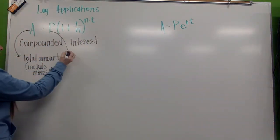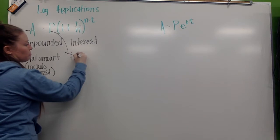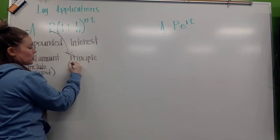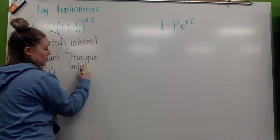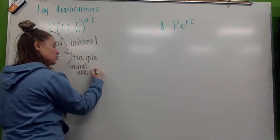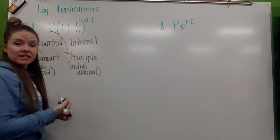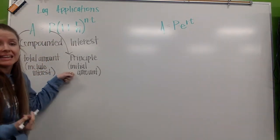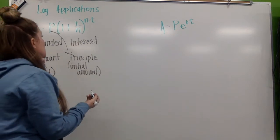Along with that, the P here, this stands for principal. The principal is your initial amount, starting amount. So, if you took out a loan, how much did you take out? If you're investing money, how much are you investing? That's what we're going to apply the interest to.